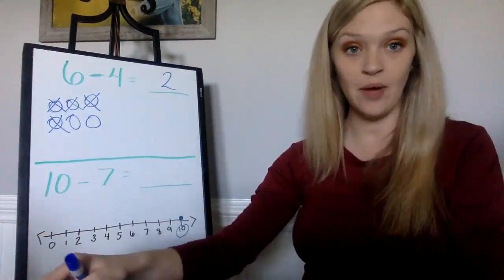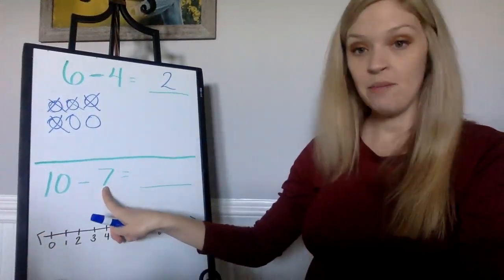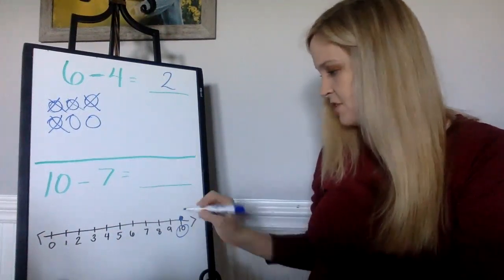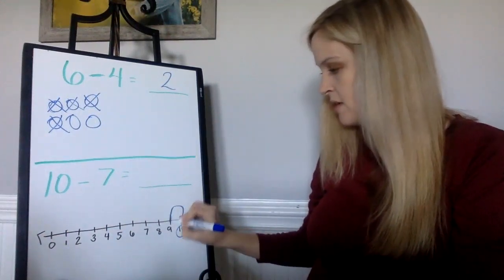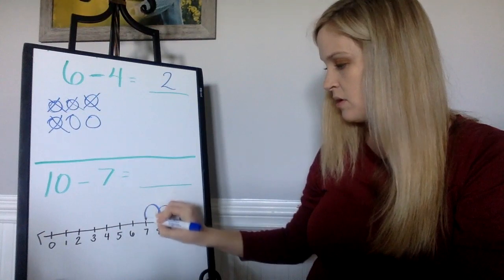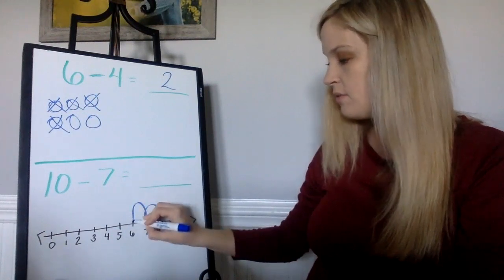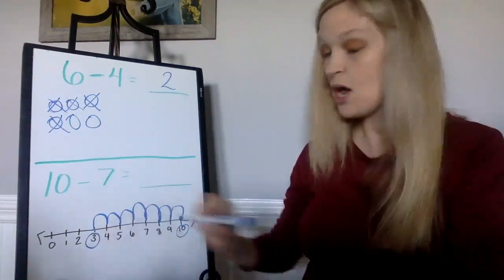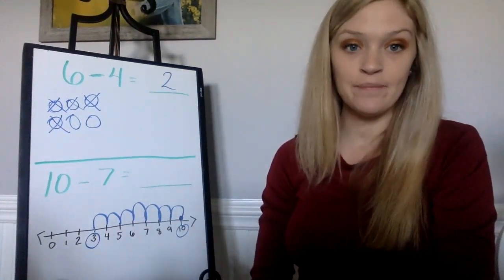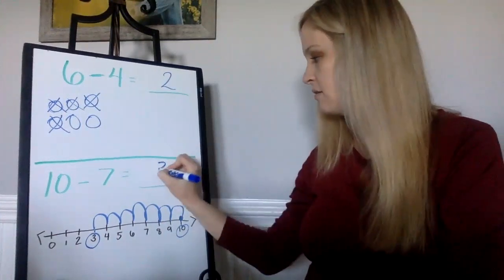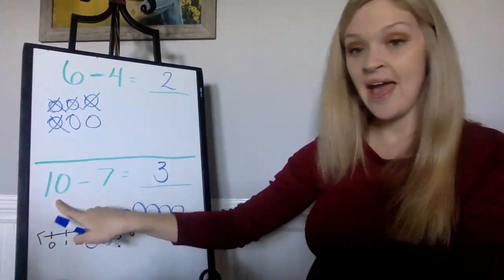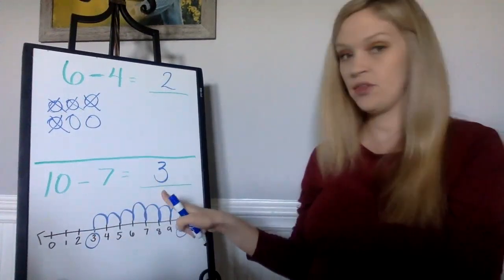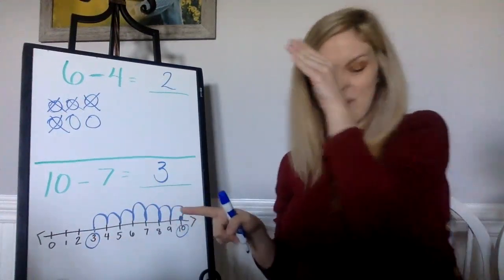So let's hop back seven spots: one, two, three, four, five, six, seven. Where did I end up at? Three. So 10 minus 7 equals 3. Now if I wanted to draw a picture just to double check this, I could.